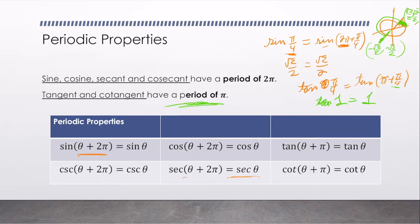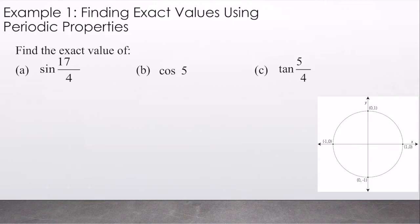So tangent and cotangent have periods of π. And sine, cosine, secant, cosecant have periods of 2π. So let's go ahead and find the exact values of sine 17π over 4, cosine of 5π, not degrees but π, and tangent of 5π over 4.